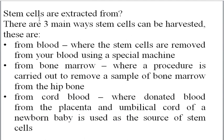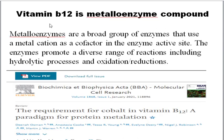The next question is regarding stem cells and how they are extracted. The three main ways stem cells are harvested: first, from blood using a special machine; second, from bone marrow extracted from the hip bone; and third, from the umbilical cord, where donated blood from the placenta and umbilical cord of a newborn baby is used as a source of stem cells.